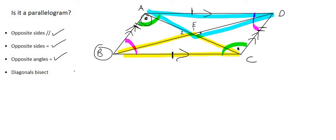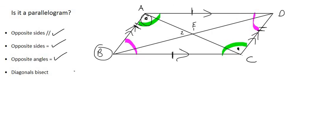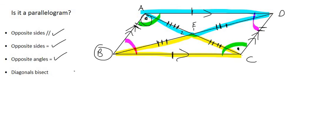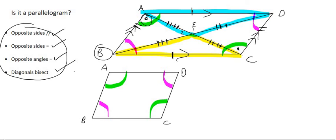We already know one side equals another side, and using vertically opposite angles plus the Z-shape from parallel lines we'd get three things, allowing us to say those two triangles are congruent by side-angle-angle. From that congruency we extract that the two halves of each diagonal are equal, proving the diagonals bisect each other. So starting from opposite angles being equal, we can use congruency to prove all the properties hold, confirming it is a parallelogram.